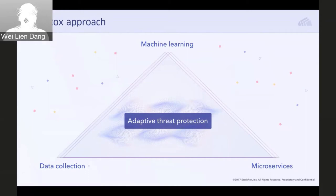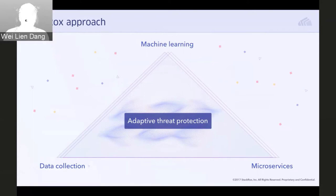Third, the platform applies multiple machine learning approaches to quickly process data, augment analysis, and discover patterns that enable you to tune detection to your particular application environment. Collectively, these three areas enable comprehensive threat protection — detection, prevention, and response — that fully adapts to your container environment and the specific applications running within it.